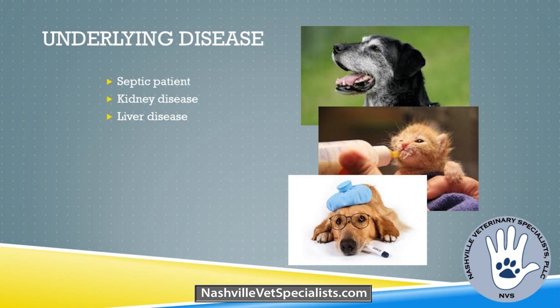Underlying diseases are another cause: septic patients, kidney disease, liver disease — patients where you didn't know they had these conditions until they're under anesthesia. We also have geriatric patients, neonates, and pediatric patients with compromised organs and systems. They're not ideal surgical candidates — they require more attention because they won't process anesthetics as easily as a healthy two-year-old lab. These patients will battle hypothermia and dehydration more readily than others.